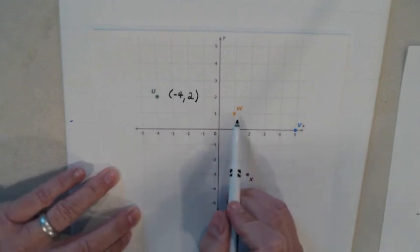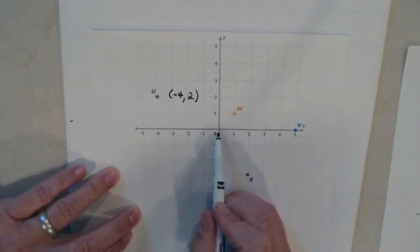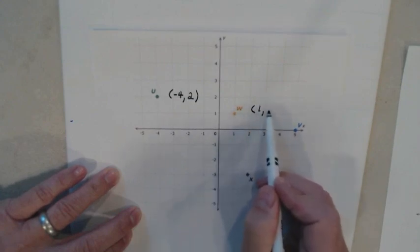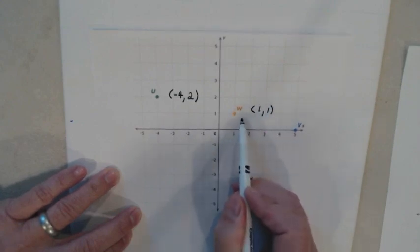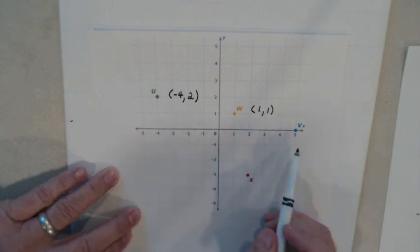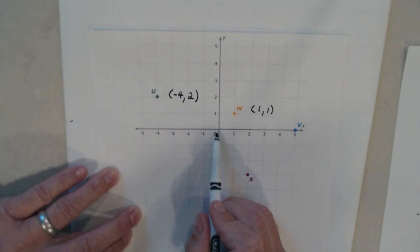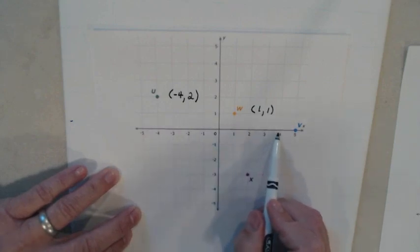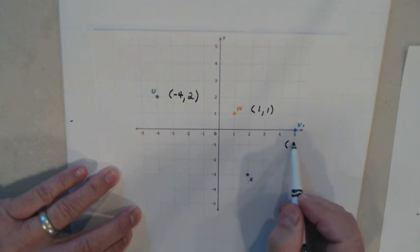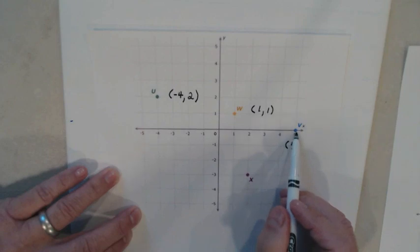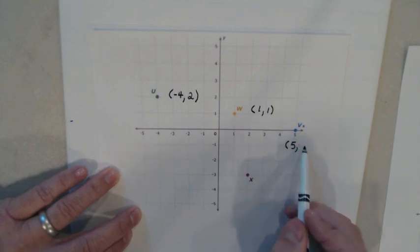Let's figure out the coordinates for W. Start at the origin, go across one, then go up one — those are the coordinates for W. Now for point V: start at the origin, go across one, two, three, four, five — so five is my first number. Then I don't have to go up or down to get to that point, so the next number is zero. The coordinates for V are (5, 0).